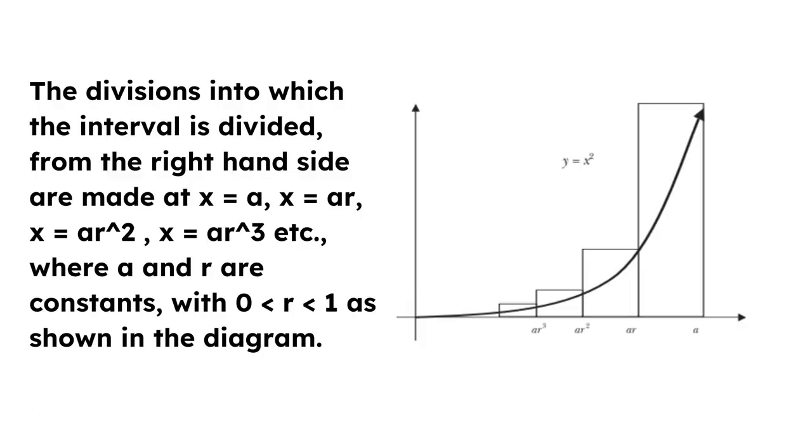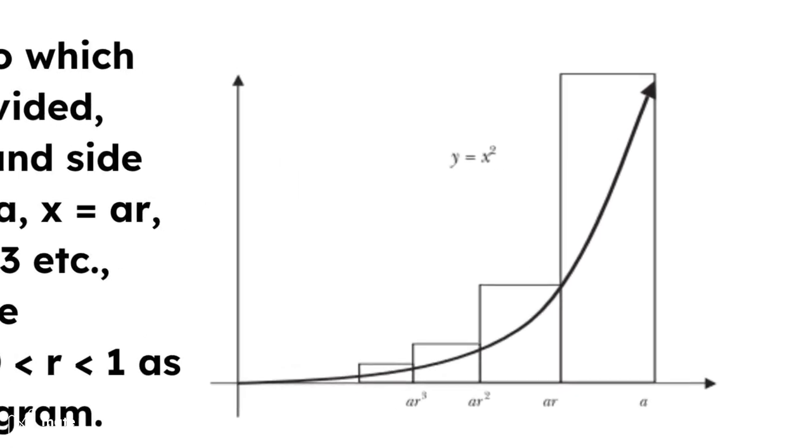The divisions into which the interval is divided, from the right-hand side are made at x equals a, x equals a r, x equals a r squared, x equals a r cubed, etc., where a and r are constants, with 0 less than r less than 1 is shown in the diagram.